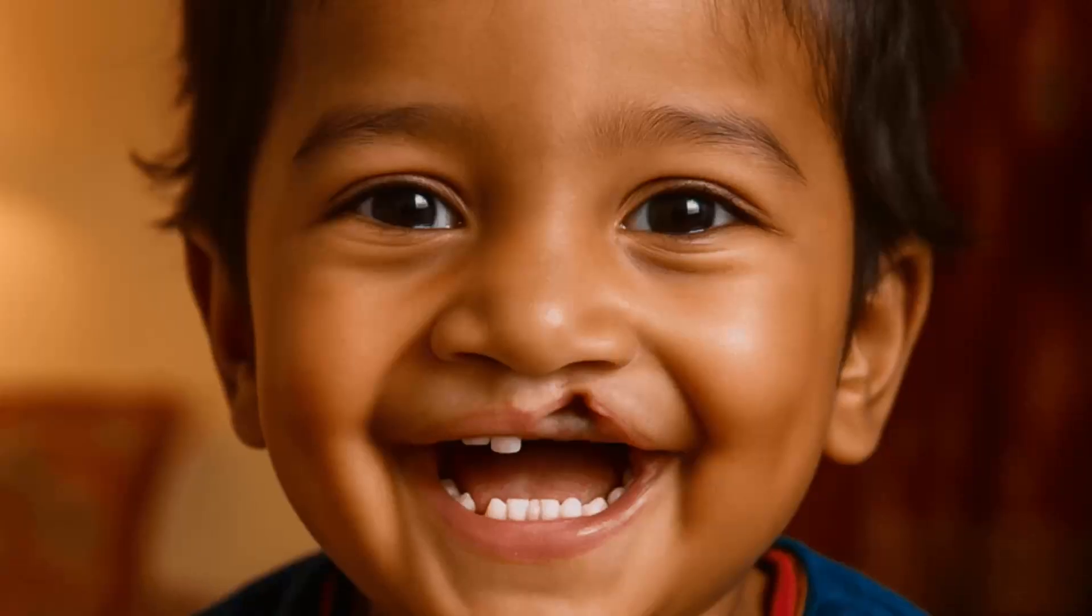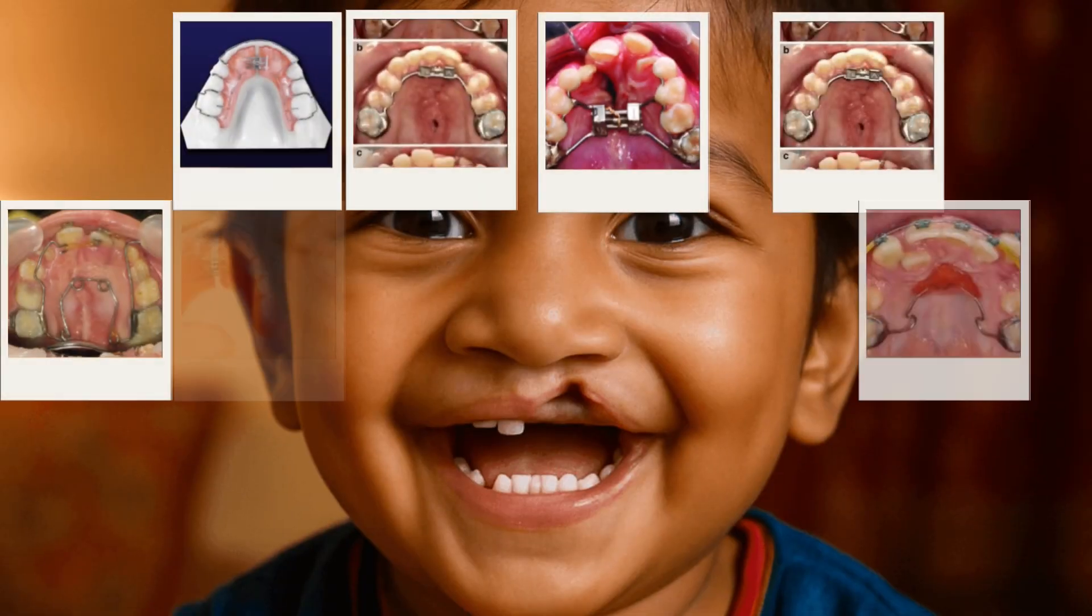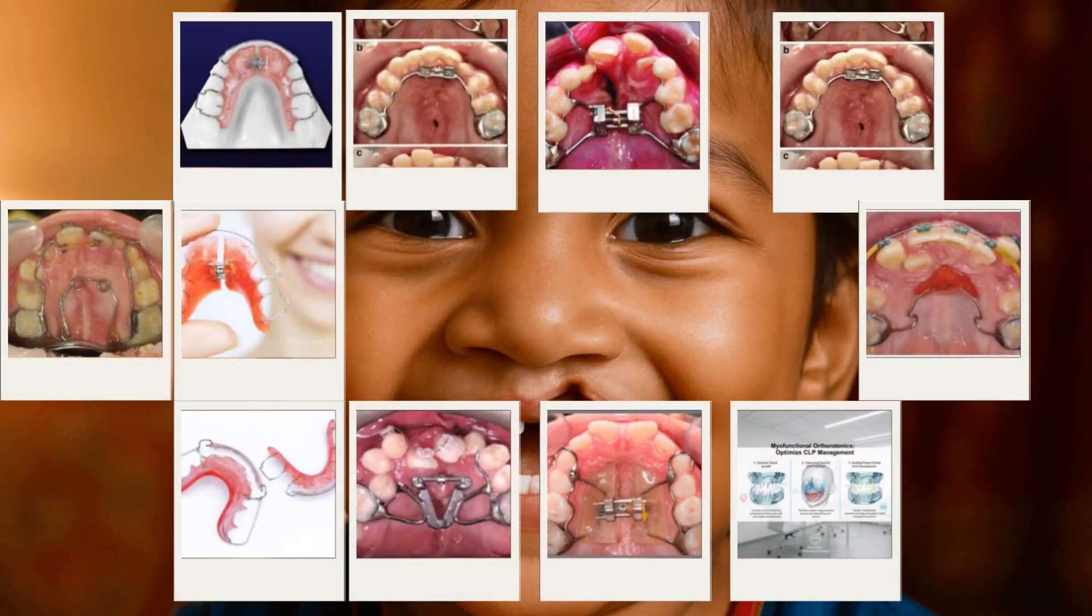It's important that the jaws are properly aligned and adequate space is created for the bone graft to be placed. For this purpose, a variety of appliances can be used—removable, fixed, or a combination of both.